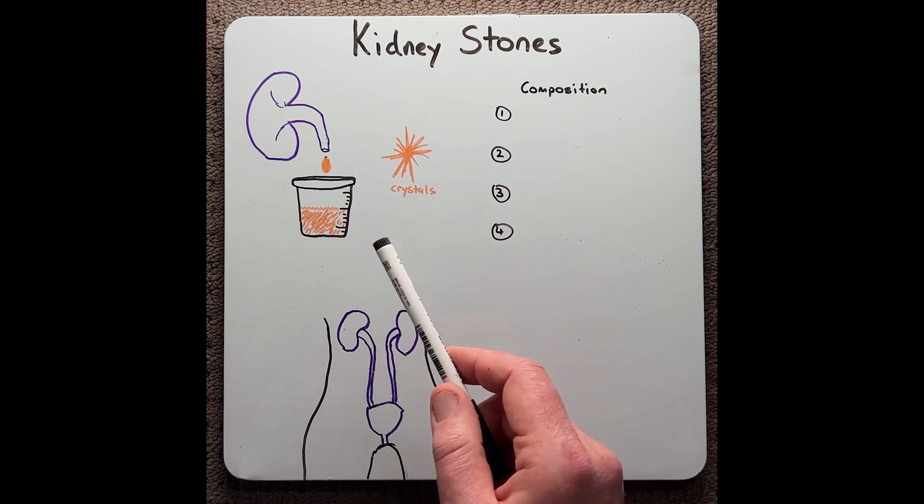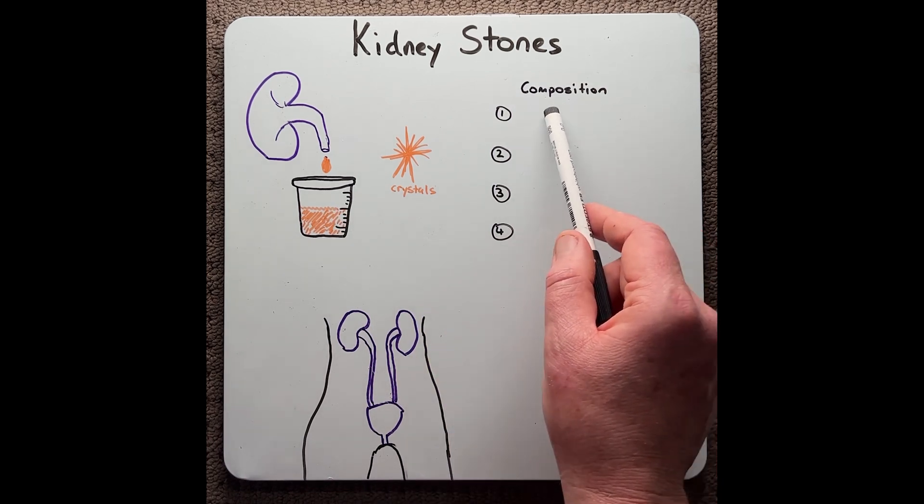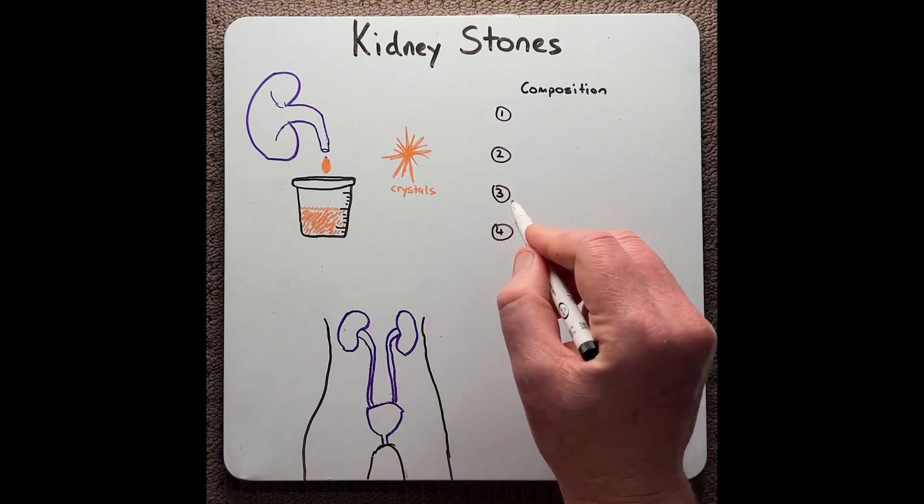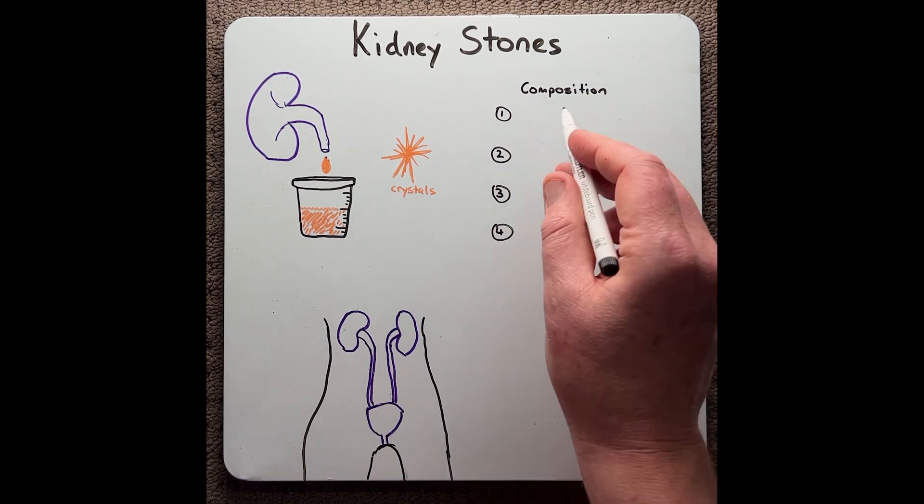Therefore, kidney stones can be classified by the composition of the stone itself. There are four main types of kidney stones based on the composition.